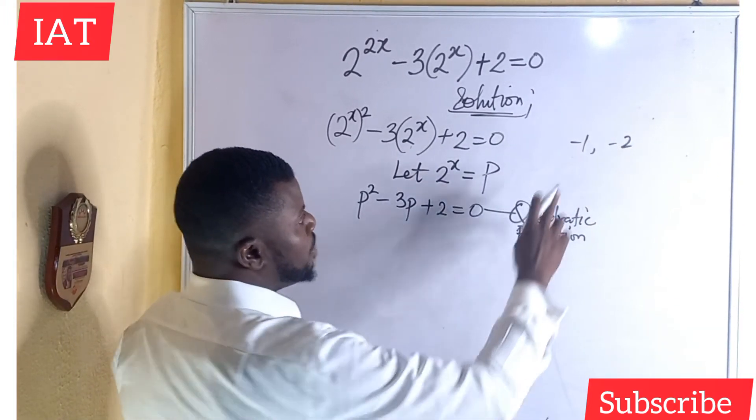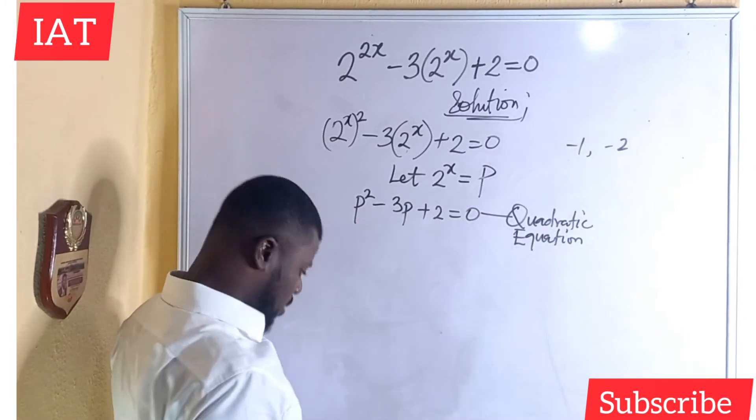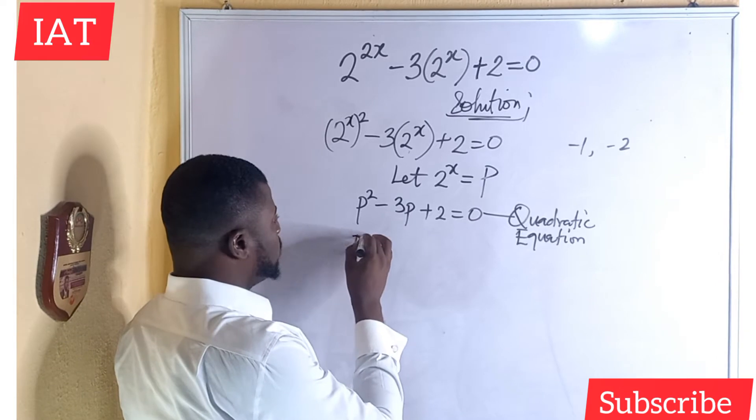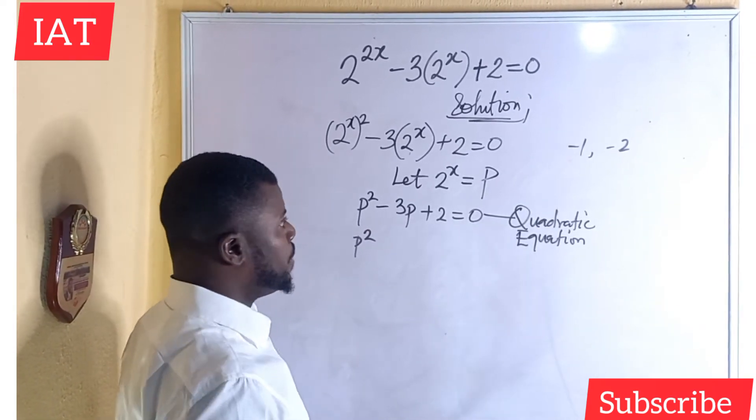So minus 1, if I multiply these two numbers, I will have positive 2. If I add them, it will give me minus 3. So I will have p squared minus, I will pick one of those numbers, minus p.